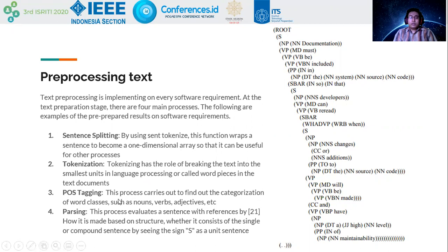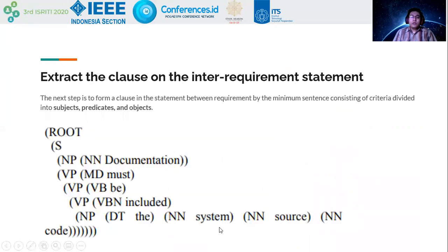POS tagging is the process carried out to find out the categorization of word types, such as nouns, verbs, adjectives, and so on. Parsing follows the sentence with reference to determine how it is structured, whether it consists of a single or compound sentence, using the sign as a unit of sentences.